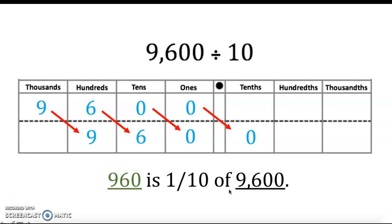That being said, 10 times as much as and one-tenth of are simply ways that we compare numbers that have been multiplied by 10 or divided by 10. These concepts are going to be revisited when we learn about decimals, and they're great ways for fifth graders to compare numbers and their values on the place value chart. I hope you guys enjoyed our video, and I can't wait to see you on Monday. We'll see you next week. Thank you.